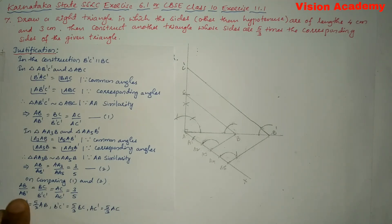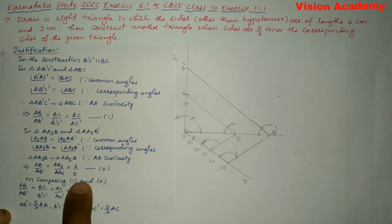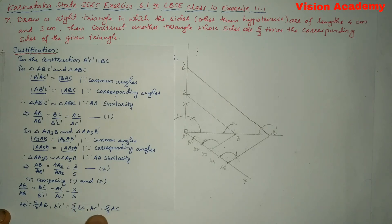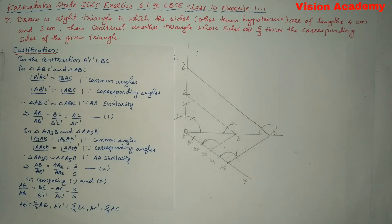On transposing AB from LHS to RHS and 3/5 from RHS to LHS, we will get: AB' = 5/3 × AB, B'C' = 5/3 × BC, and similarly AC' = 5/3 × AC. This is the justification.